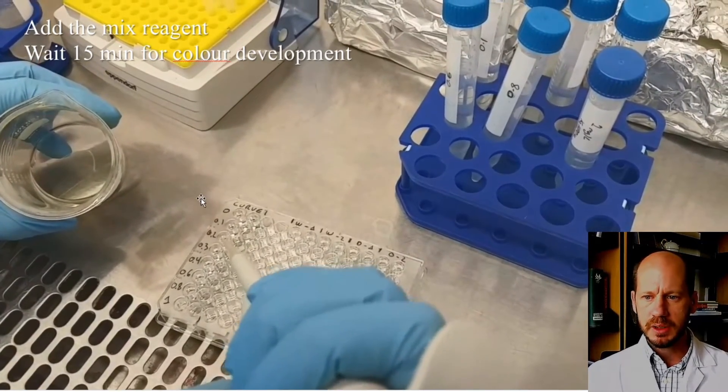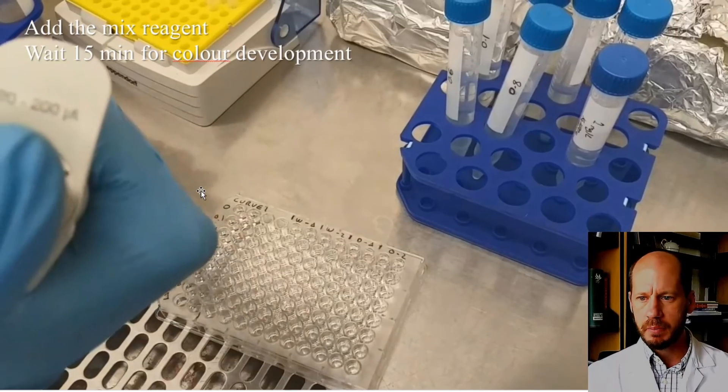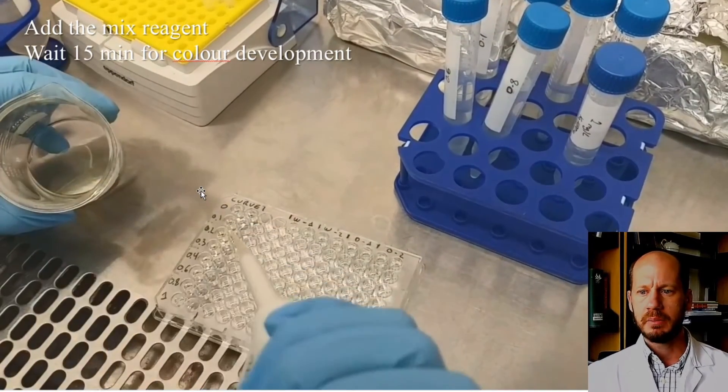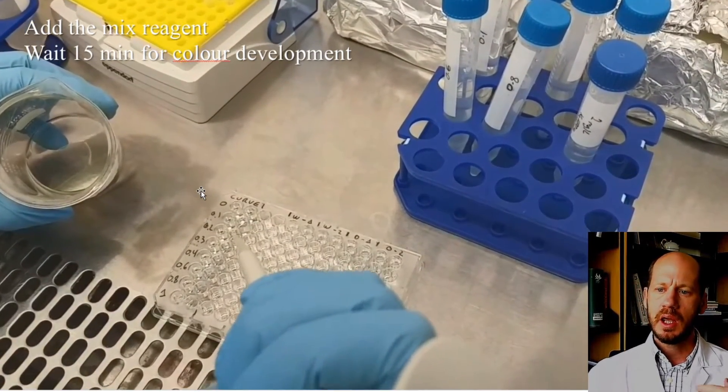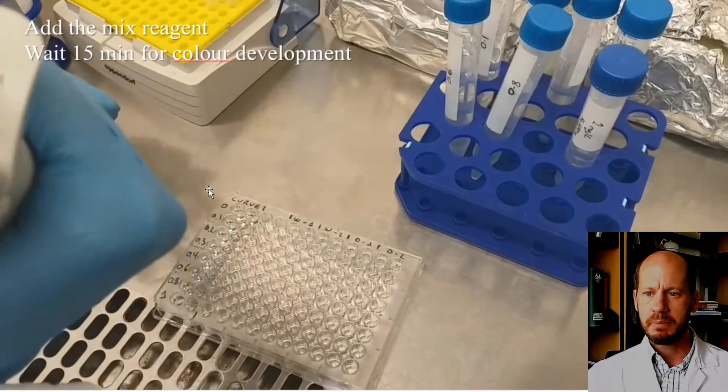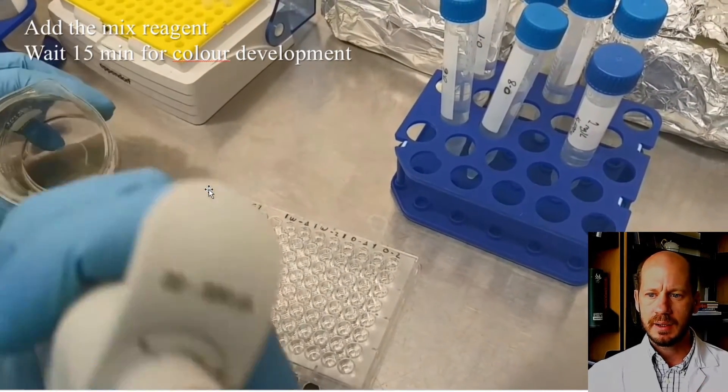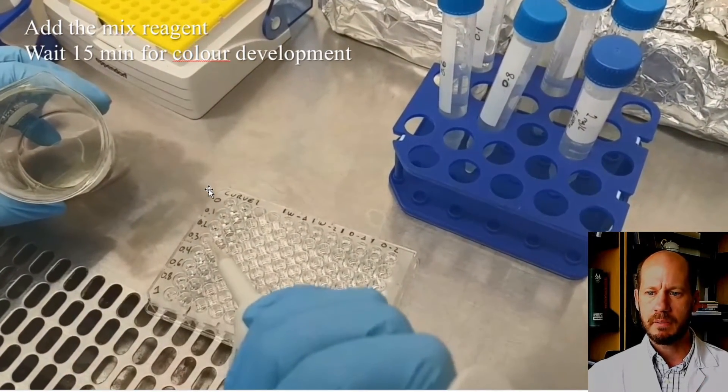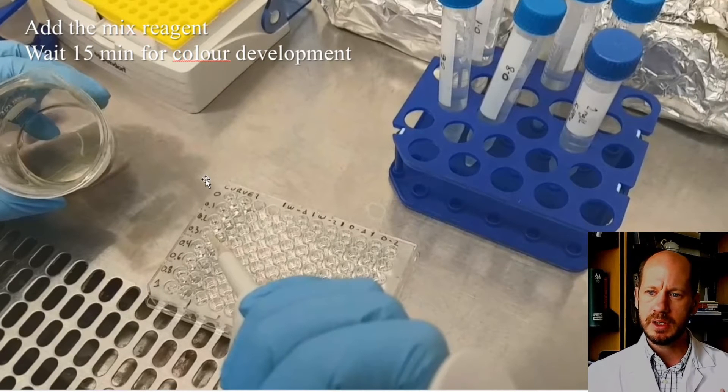When you approach one hour, you start having error because of too much color being developed. Ideally, you will measure this around 20 minutes, and you have to measure at the same time the standards and your samples. This is the correct approach to have a microplate or plate reader, because then you can measure them together at the same time.